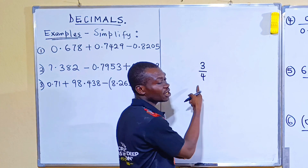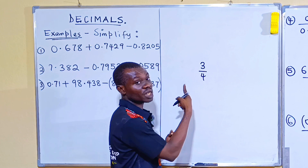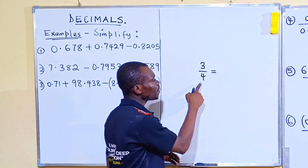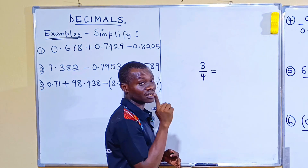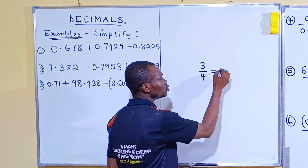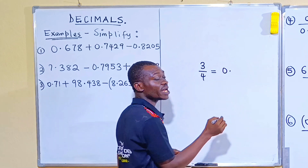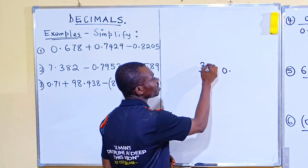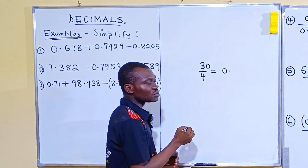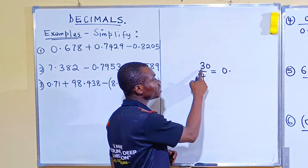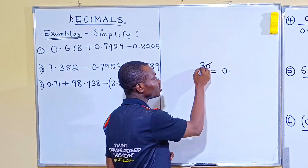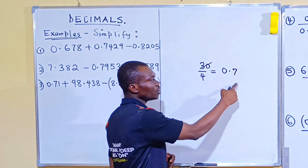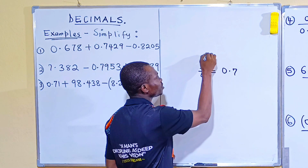We can use long division or short division to do this. Using short division: 4 into 3, it cannot go. So you put 0 point — whenever you divide and it doesn't go, you put 0 point. Then you add 0. So now you divide again. 4 into 30 is going to give you 7, remainder 2, because 4 will divide 28 to give you 7.